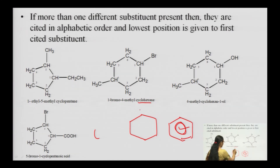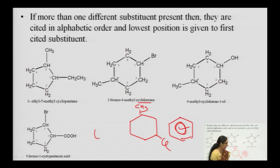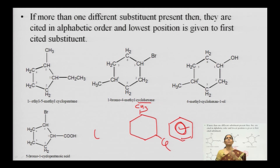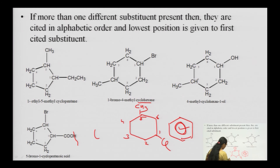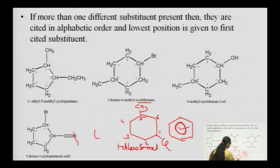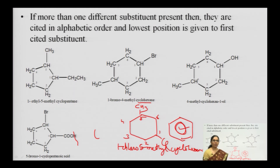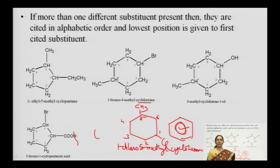For example, a hexagon with methyl and chlorine substituents: evaluate the priority series — chlorine has higher priority than the alkyl substitution methyl. Numbering comes out as 1 (chloro), 2, 3, 4, 5 (methyl), 6. The compound name is 1-chloro-5-methylcyclohexane.